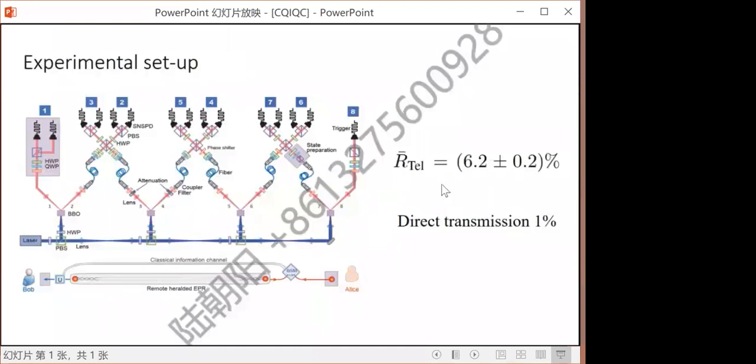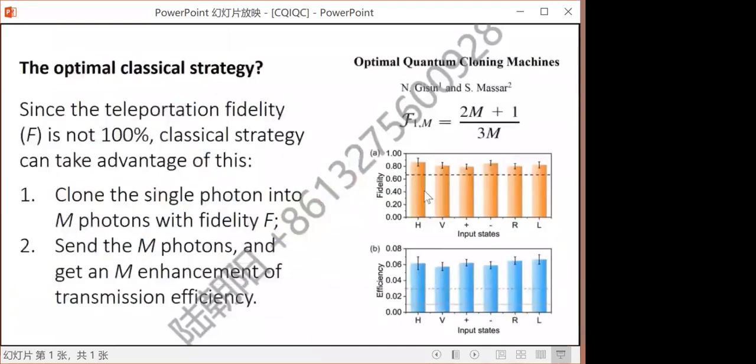This is promising, but some people could challenge this result. Much like Pan Zhang and his colleagues use imperfect fidelity in Google's Sycamore experiment to shorten the classical simulation time. Our teleportation fidelity in the end is also not 100 percent. It's about 82 percent, 81 percent.